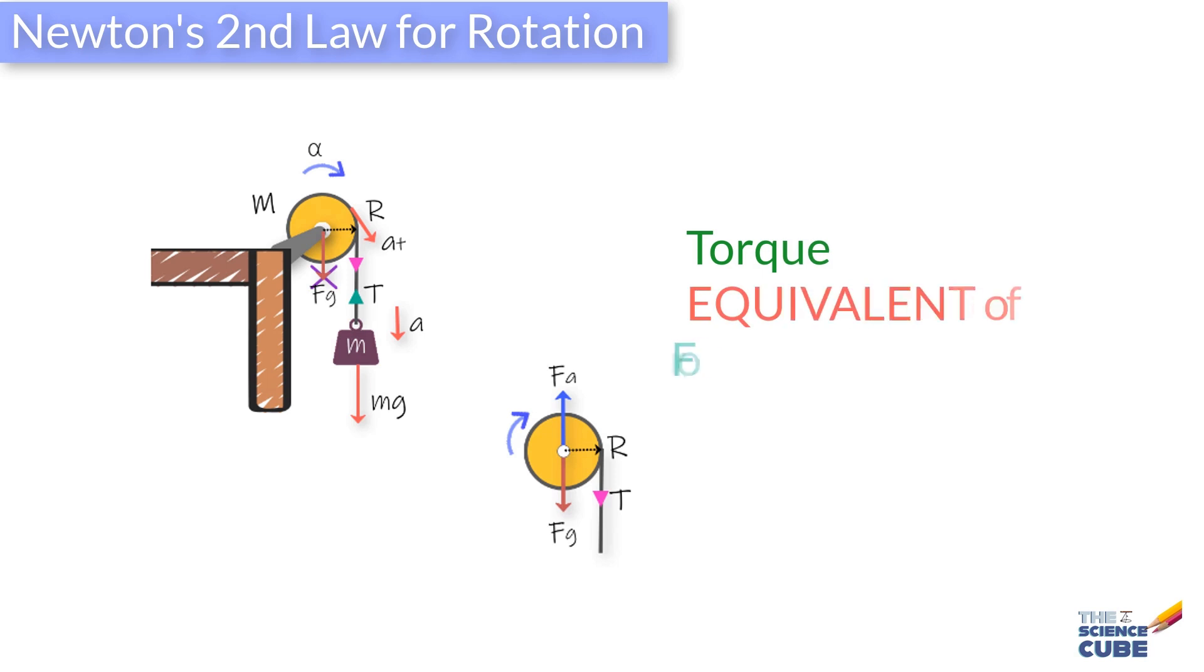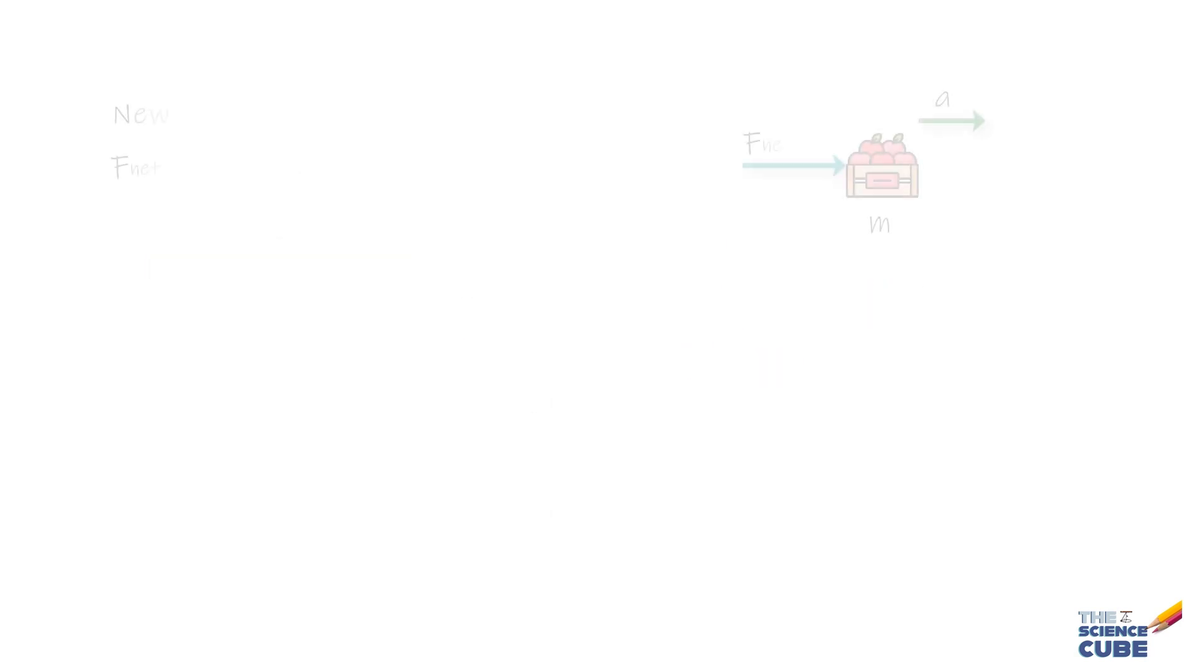Since torque is the equivalent of force in linear motion, we can make use of Newton's second law to draw an analogy wherein we replace the net force with net torque, mass with I or the moment of inertia, and alpha with acceleration A.